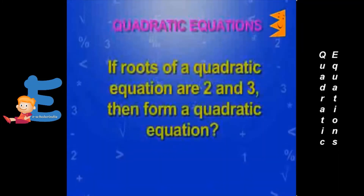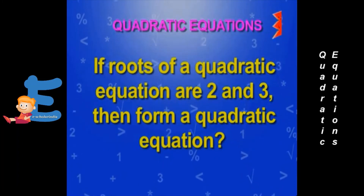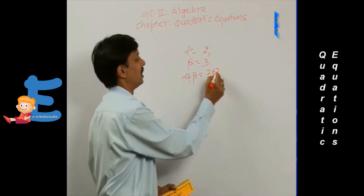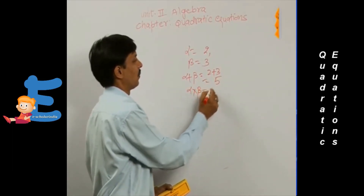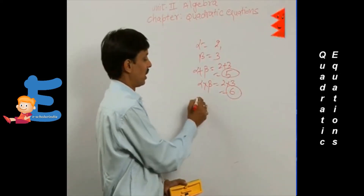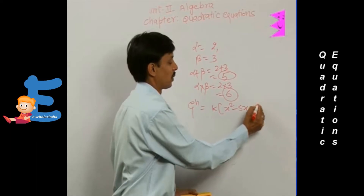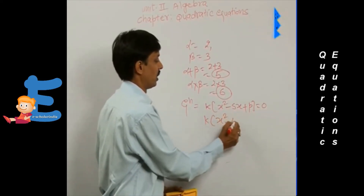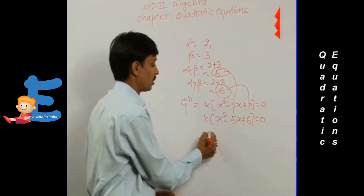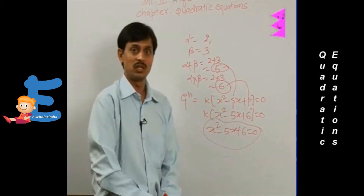Example: if roots of a quadratic equation are 2 and 3, what is the quadratic equation? Alpha = 2, beta = 3. Sum of roots alpha + beta = 2 + 3 = 5. Product of roots alpha × beta = 2 × 3 = 6. So the quadratic equation becomes k(x² - 5x + 6) = 0, giving x² - 5x + 6 = 0.